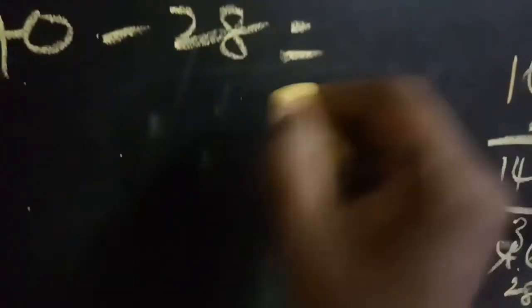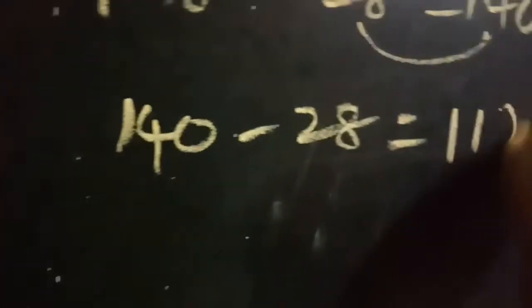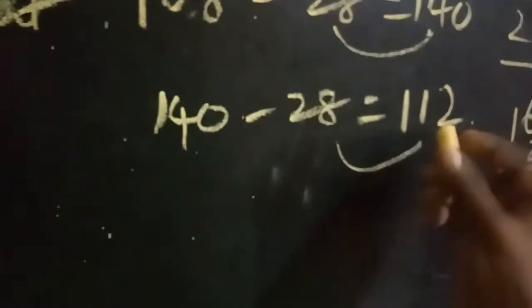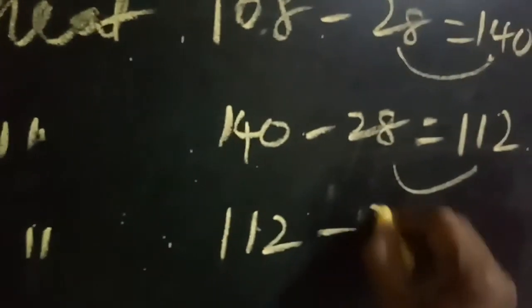140 minus 28 equals 112. Next, the largest number is 112 and 28.